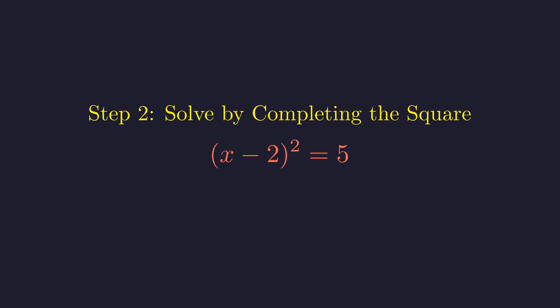Taking the square root of both sides. And don't forget, when we take a square root, we get both positive and negative solutions. Finally, adding 2 to both sides to solve for x. So we get two possible values for x.